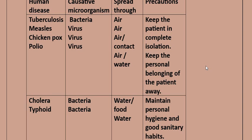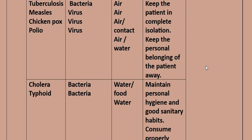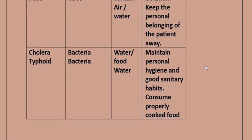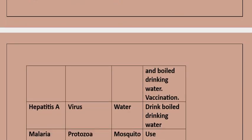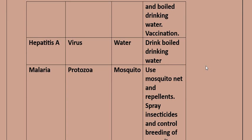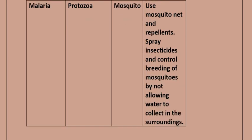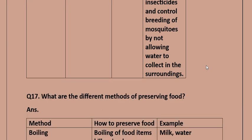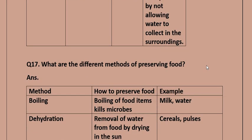Precautions for cholera/typhoid: maintain personal hygiene and good sanitary habits, consume properly cooked food and boiled drinking water, and vaccination. Hepatitis A is caused by a virus spread through water; precaution is to drink boiled water. Malaria is caused by protozoa spread by mosquitoes; precautions include using mosquito nets, applying insecticides, and controlling mosquito breeding by not allowing water to collect in the surroundings.